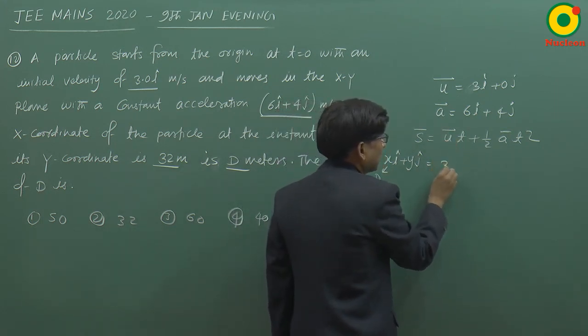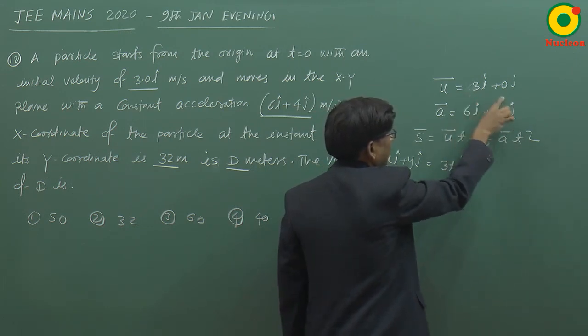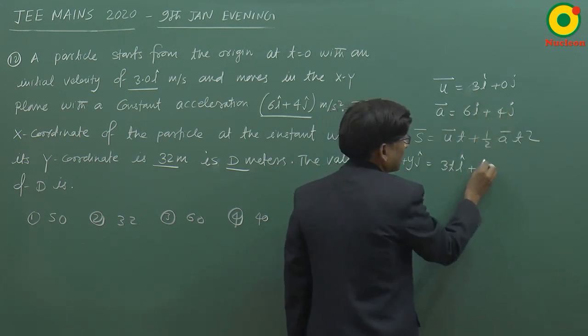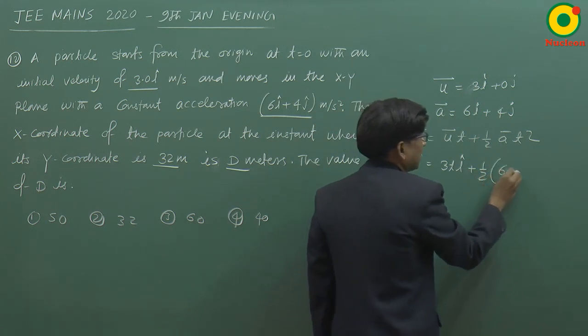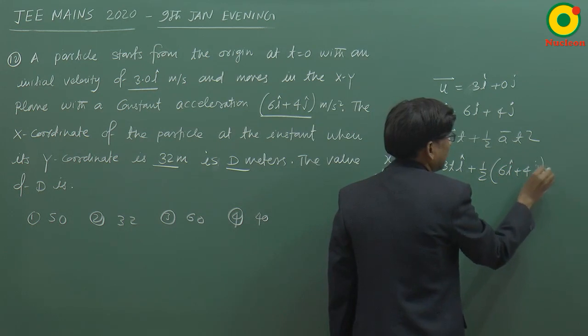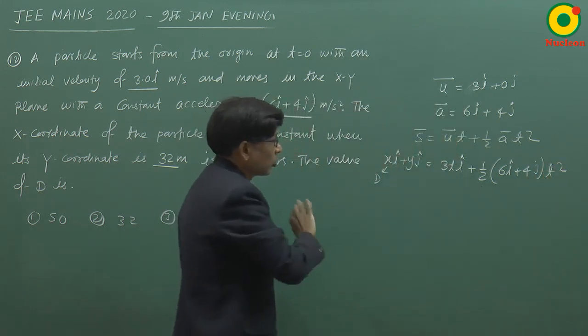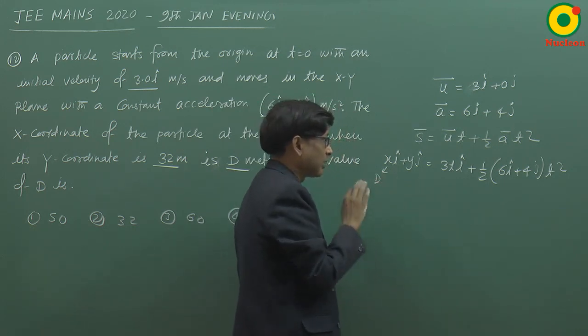u ko likhenge 3 into t i cap, yeh rakh diya hamne woh u ke jagah par, plus half acceleration hai 6i plus 4j into t square. Dono side mein x ke components ko compare kar sakte hain.